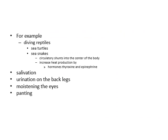Other strategies include diving reptiles — sea turtles and sea snakes are examples. Circulatory shunts toward the center of the body increase heat production by hormones thyroxine and epinephrine. Reptiles also start salivation, urinate on their legs for evaporative cooling, wet their eyes, and pant — just like a dog — all for evaporative cooling.